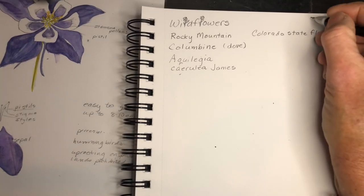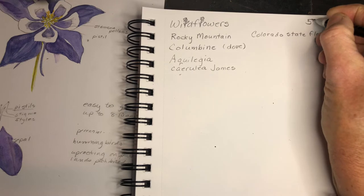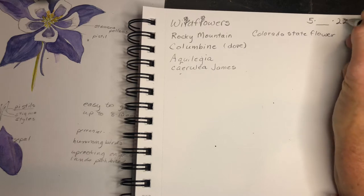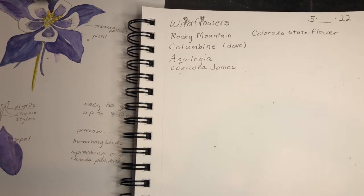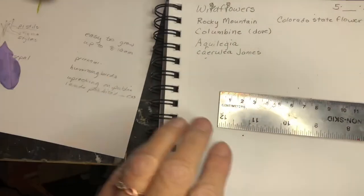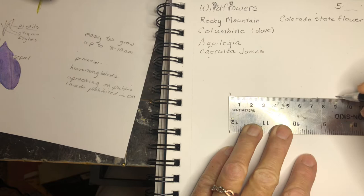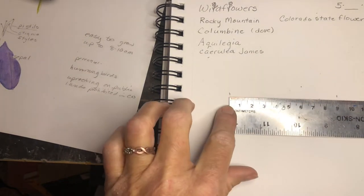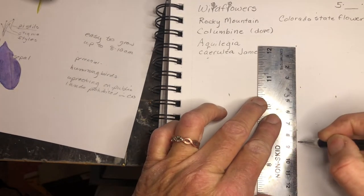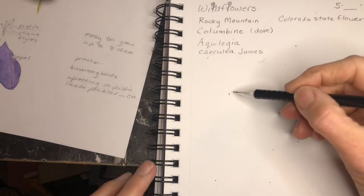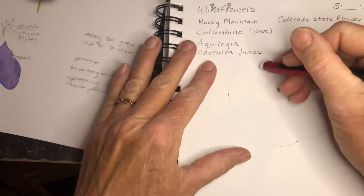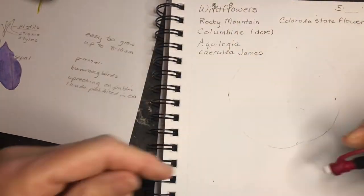You can write your date — May is the fifth month, so put five, then a blank for the day, and the year 2022. The Columbine measures about eight to ten centimeters, so I'll make a little mark on my paper approximately that size, and draw a circle to help me get the petals and sepals the right length.